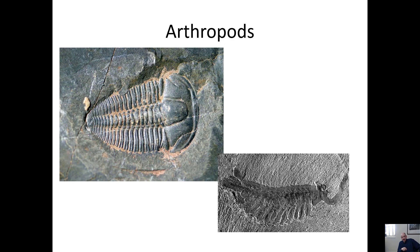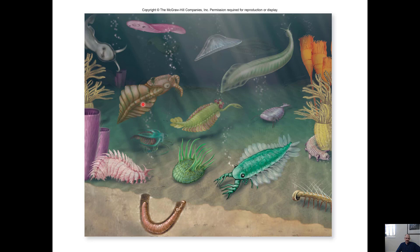The most abundant phylum on the planet in terms of animals is Arthropoda. This includes animals with an exoskeleton, jointed legs, and a segmented body plan. An ancient form, the trilobites, used to be one of the more dominant species on the planet but went extinct at the end of the Paleozoic. Arthropods first show up during the Cambrian explosion, where we can already see their segmented body, exoskeleton, and jointed appendages alongside annelid worms, sponges, chordates, cnidarians, and flatworms — all the major phyla we've been discussing.